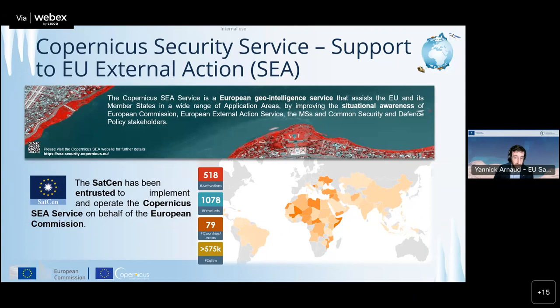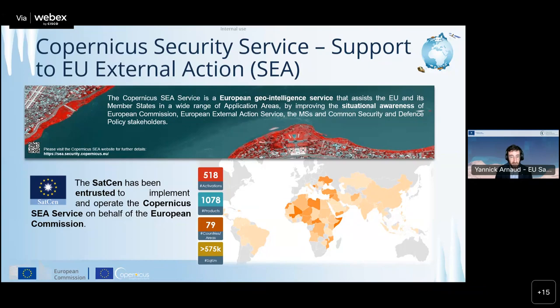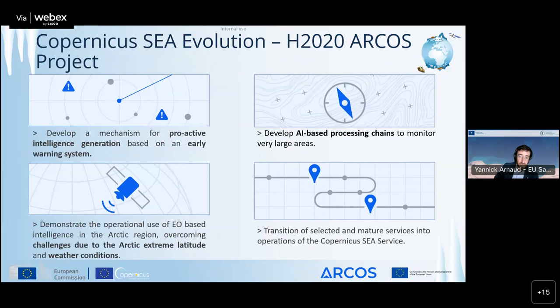The Copernicus Security Service, one of the free Copernicus security services, is an operational service that provides geospatial and intelligence information to the European Union and its member states in a wide range of application areas, including rule of law, humanitarian aid, and crisis and conflict. It is a user-driven service and we assist authorized users in enhancing prevention, preparedness, and response to crises by offering a comprehensive approach for situational awareness and decision-making. The SatCen has been entrusted to implement and operate this service, and since 2017 more than 1,000 products and 500 user requests have been received.